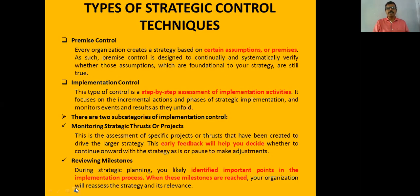The types of strategy control depend upon certain types of environment and certain types of assumptions. These assumptions can better be called premises. The assumptions or premises taken in the controlling process will be continually designed, systematically articulated, and verified so that the organization's strategic performance is recorded.